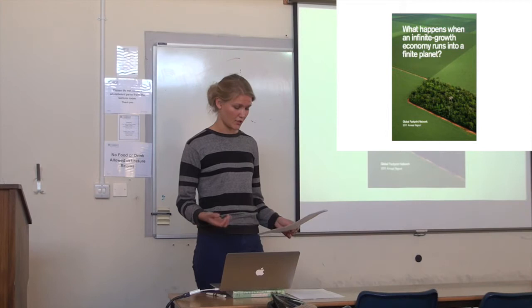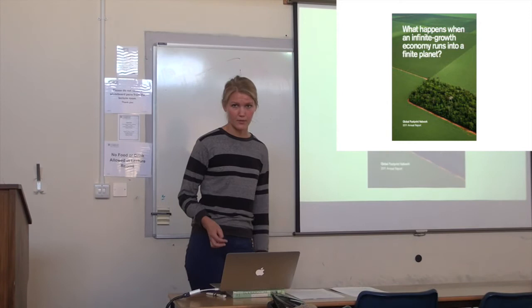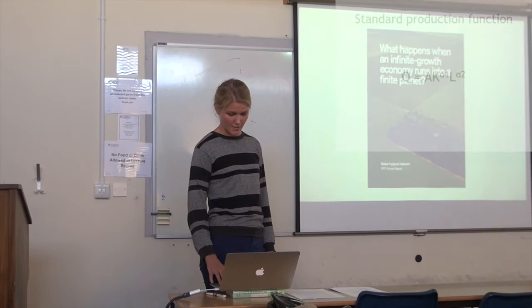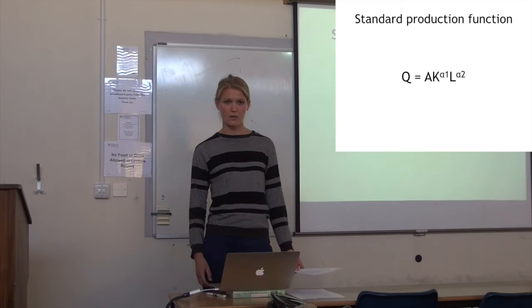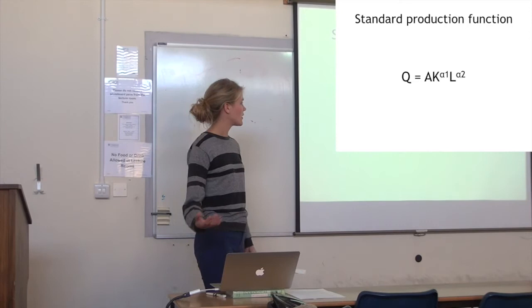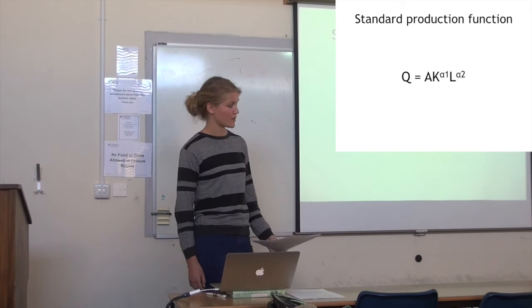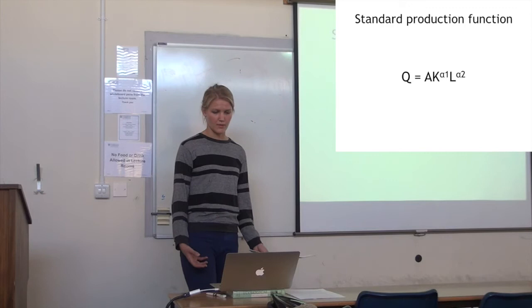This leads us to one of the fundamental functions used in mainstream economics, namely the production function. Here we have the Cobb-Douglas production function, where Q denotes output, A denotes available technology, K is capital, and L is labor. The exponents tell us how easy it is to substitute between the different inputs — they're the elasticities of substitution. This function is important because all major micro- and macroeconomic models of production are founded on this particular function.